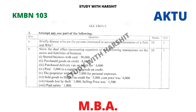In Section C, attempt any one part of the following. Question A: Briefly discuss who are the persons interested in accounting information of a firm and why.